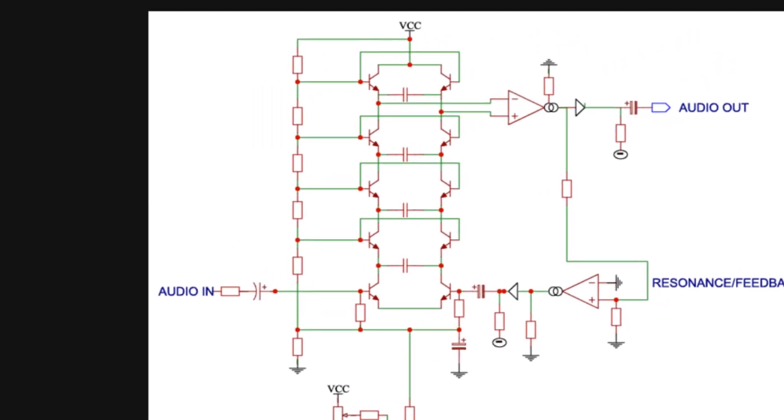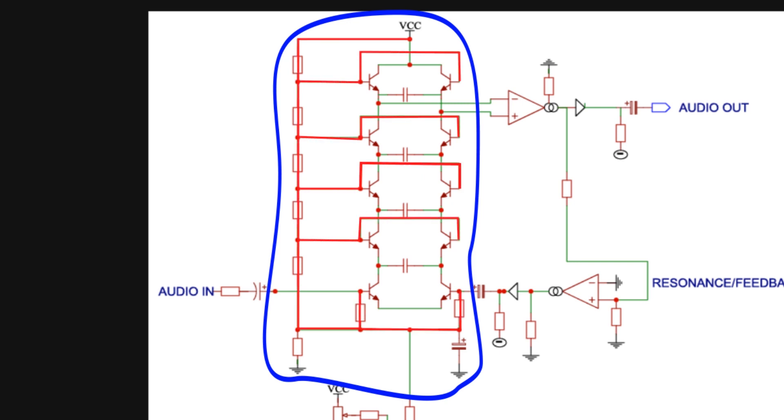This is the part of the filter that does the actual filtering. If you use transistors, you'll need to bias the bases via the biasing network. But if you use diodes, that will not be necessary, apart from the topmost and bottom transistors.